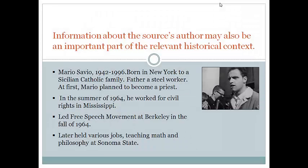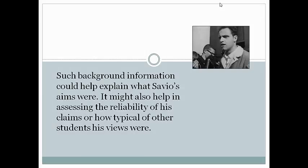Information about the source's author may also be an important part of its historical context. Here are some aspects of Savio's background that could help students understand his role in the Berkeley Free Speech Movement. Such background information could help explain what Savio's aims were, assess the reliability of his claims, or how typical his views were. Savio's religious background and his involvement in the civil rights struggles in Mississippi may help explain the stand he took at Berkeley.